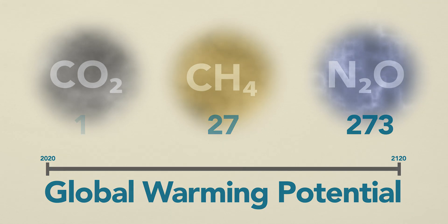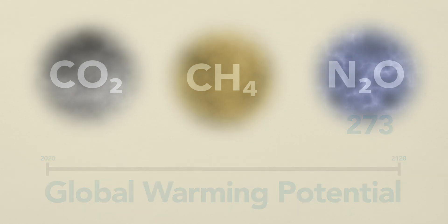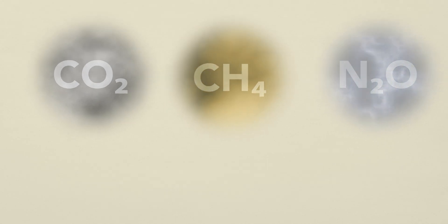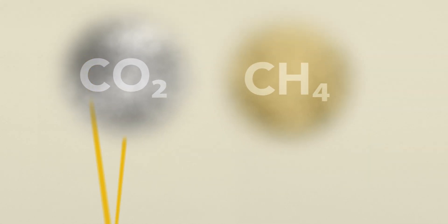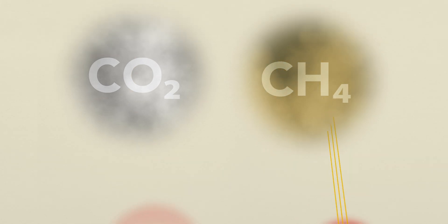Nitrous oxide is emitted in small quantities from drained peatlands only, and behaves much like carbon dioxide. If a peatland is re-wetted, nitrous oxide emissions stop. For simplicity, in the following we will look at carbon dioxide and methane only.